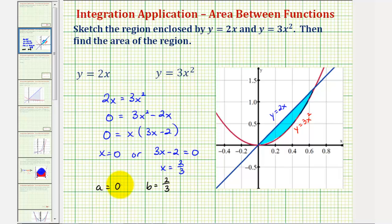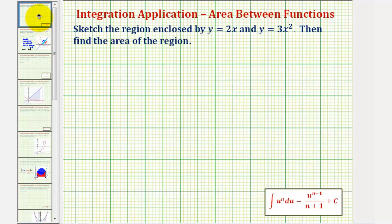Now let's set up the definite integral to find this area. We'll have the integral of the top function minus the bottom function, which was the linear function minus the quadratic function, integrated from zero to 2 thirds.